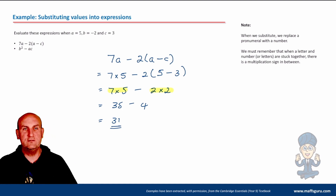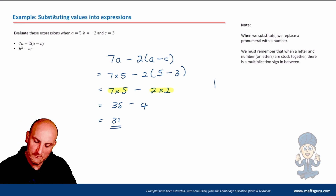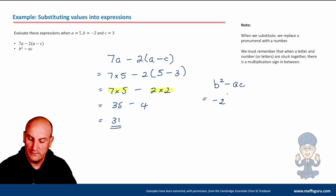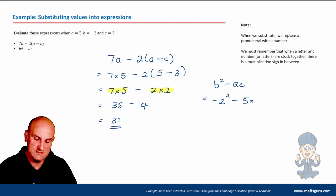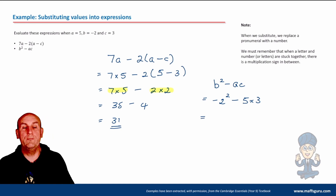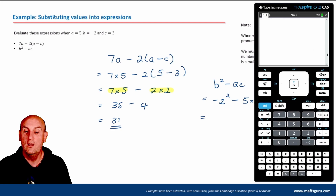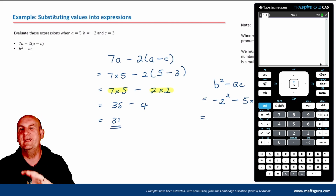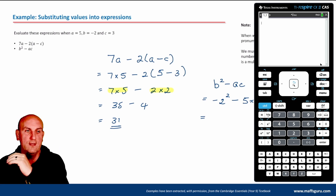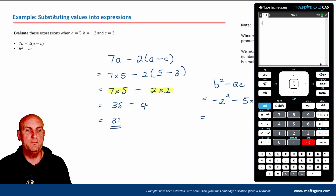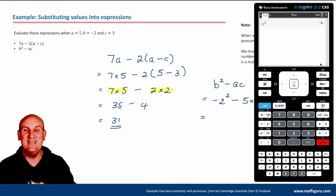Next: b squared minus ac. Write it down, put an equals sign. The value of b is negative 2, so negative 2 squared, minus 5 times 3. Many people try putting minus 2 into their calculator and squaring it - the calculator comes out with minus 4. That is wrong. Your calculator is stupid - it doesn't know who that minus sign belongs to.